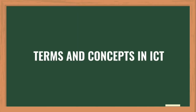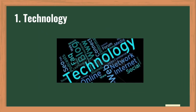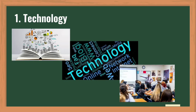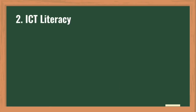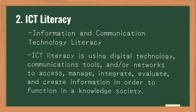Now it's time to understand the terms and concepts in ICT. First, we have Technology. Technology refers to a mix of process and products used in the application of knowledge. When used correctly, it can benefit our education systems, teachers, and students — encouraging critical thinking, creativity, and computer skills. It is also knowledge or a set of tools that helps make things easier or solve problems. Next is ICT literacy, or Information and Communication Technology literacy — using digital technology, communication tools, and networks to access, manage, integrate, evaluate, and create information in order to function in a knowledge society.